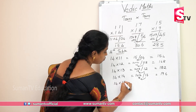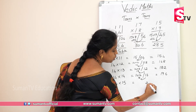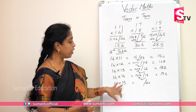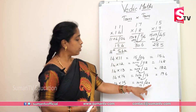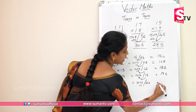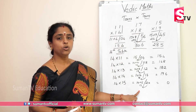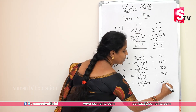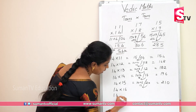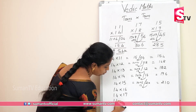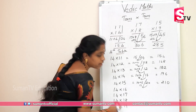14 into 15. 5 fours are 20. 14 plus 5 — you will be getting 19. Write off this 0, carry the 2. 2 plus 19 is 21. So 14 into 15 is 210. Now try 14 into 16, 14 into 17, 14 into 18, and 14 into 19 by yourself.